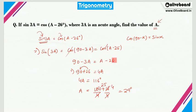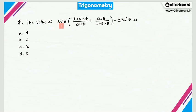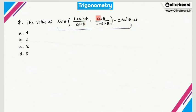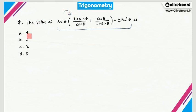Now let's move on to question number 3. Again, I'll request you to solve it by yourself first. The best method to solve problems where theta is in the question but the options are independent of theta is to assume any value of theta, substitute it into the equation, and then tally with the options.